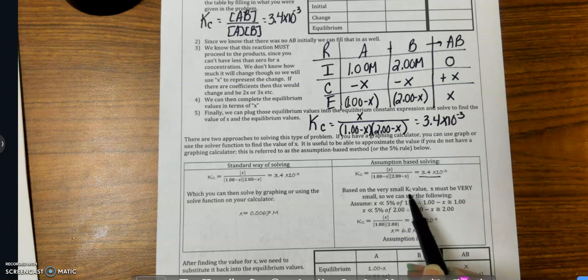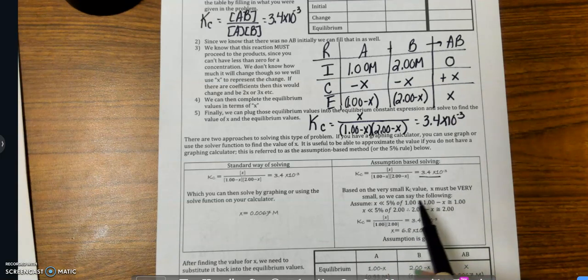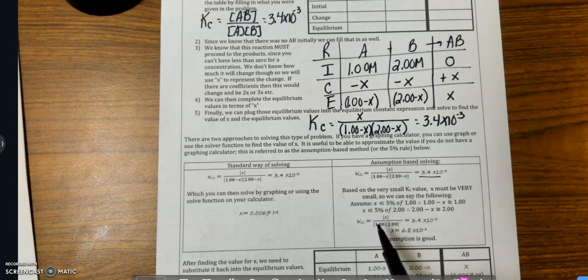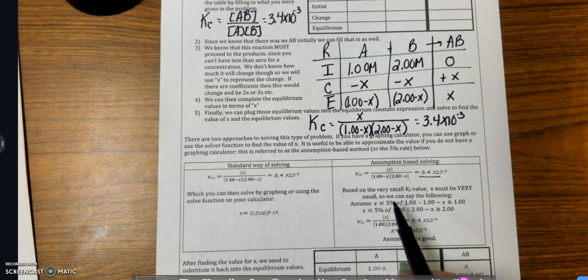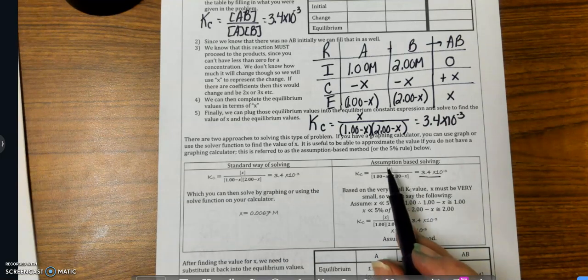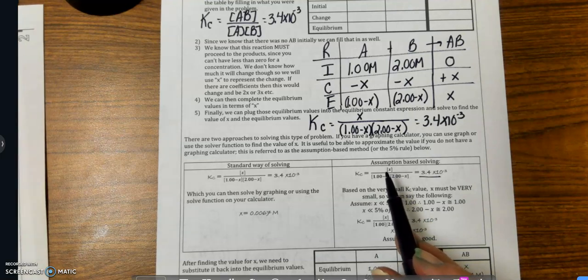So it says, based on the very small K value, X must be very small. So we can say the following. We're going to assume that X is going to go away here. So I'm going to rewrite my equation, and this X, we have to keep this one because we can't make that zero, right? Or you don't have a reasonable expression. But we can assume that these are zero.